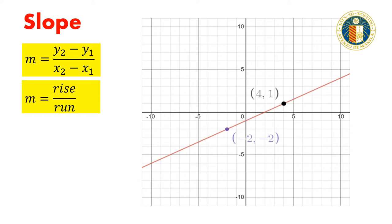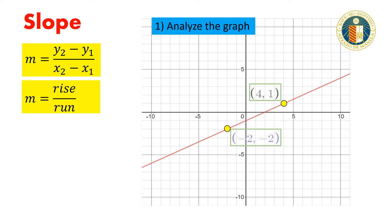Let's take a look at our line. If we can identify two points that have integer coordinates, we could analyze the graph of the line to determine the slope. For example, we could analyze the vertical change and horizontal change from point negative 2, negative 2 to point 4, 1.